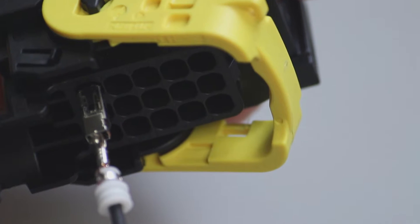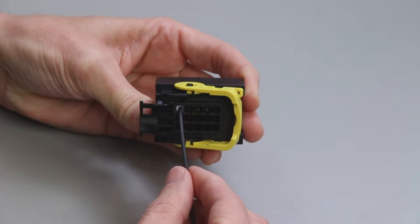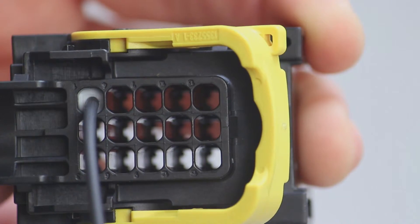Push the contact straight into the rear of the connector until you hear and feel a click. A slight tug will verify the contact is locked in place.